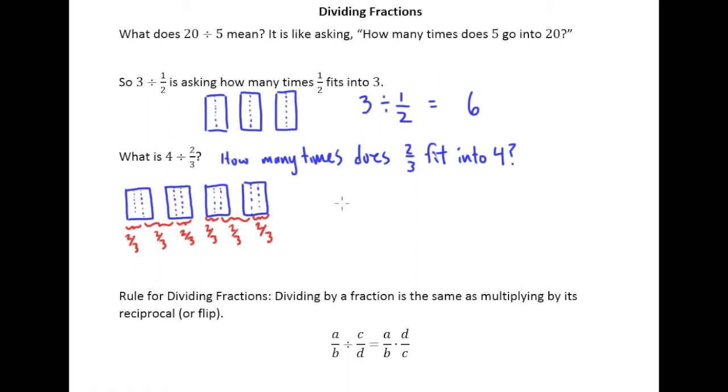So on the one hand, we can say, all right, 4 divided by 2 thirds equals 6. Okay, and it's just coincidence that these happen to be the same answer. All right, but let's also think about where this 6 may have come from.